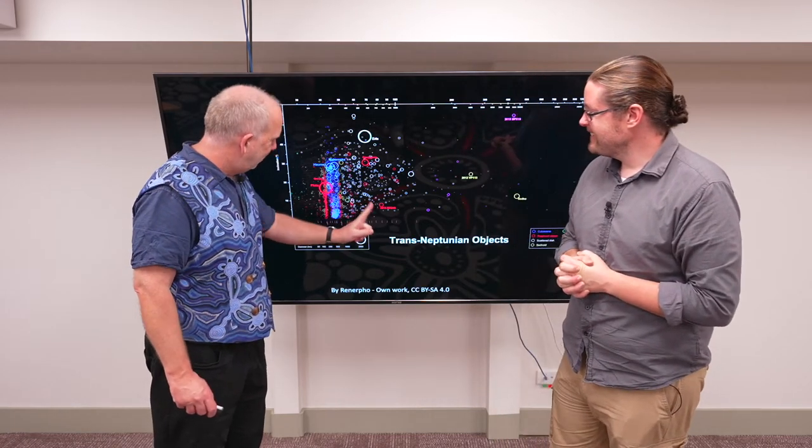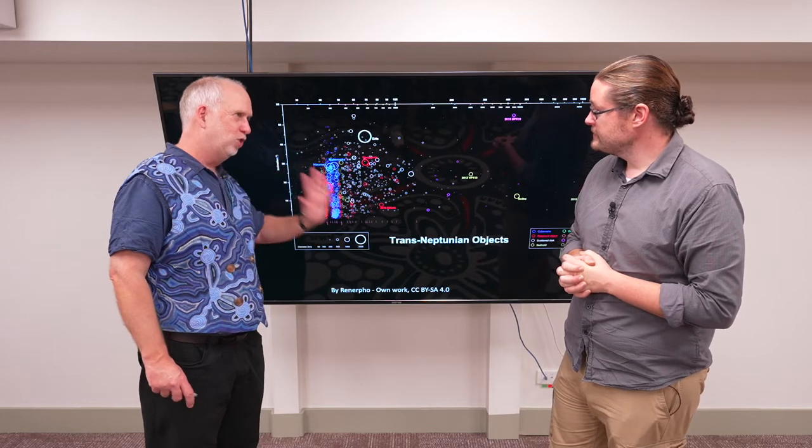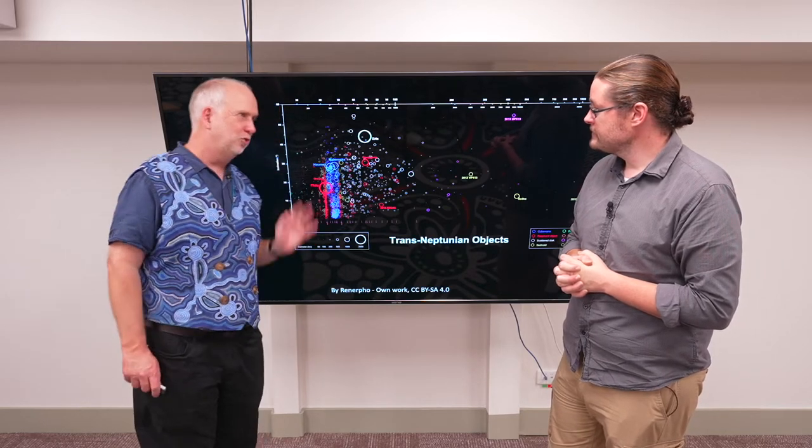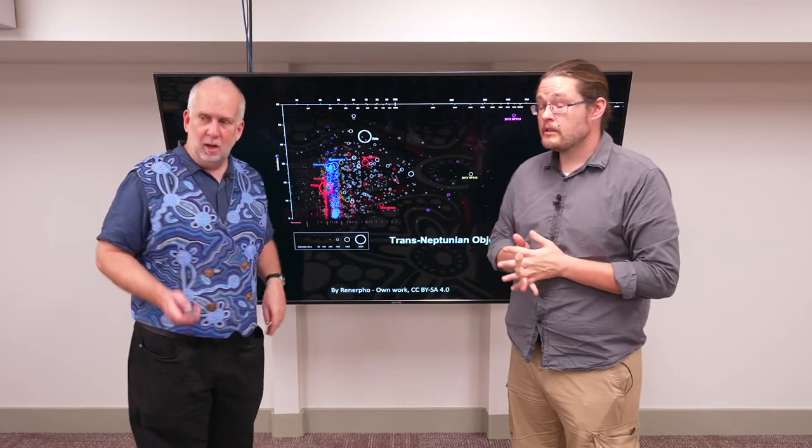You can see a whole bunch of these vertical lines, and it seems that a large fraction of the trans-Neptunian objects are in resonances with Neptune.